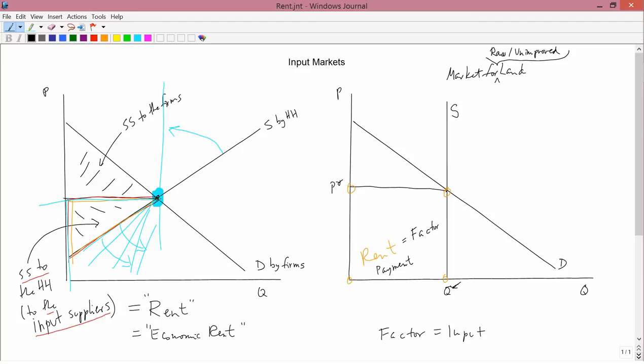Now, economic rent is used in other kinds of markets like the one on the left. Again, economic rent just means the social surplus to the input supplier. So it's not always the whole factor payment. In the graph on the left, it isn't. It's the triangular area there.